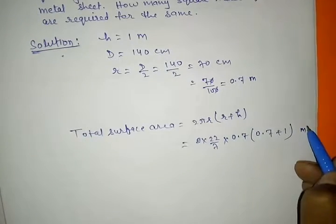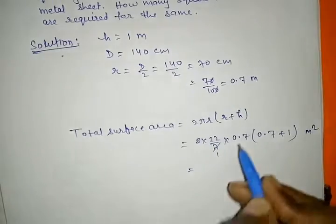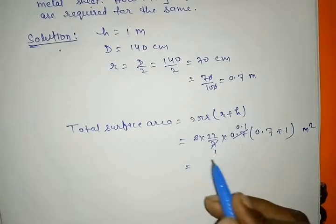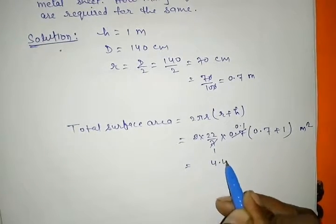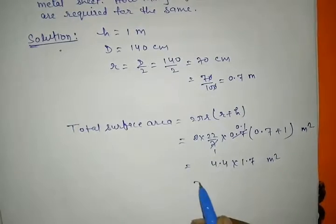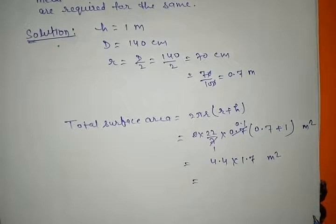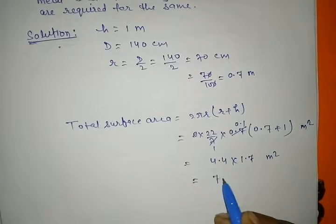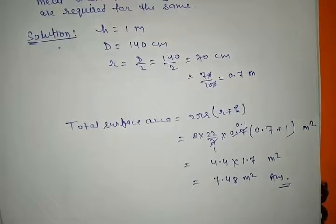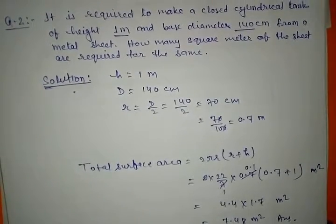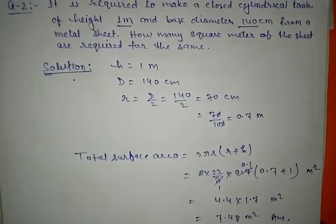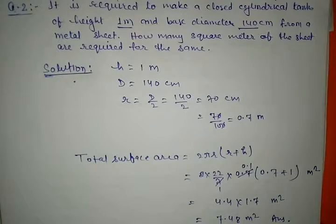यह जाएगा meter square। अब काटते हैं: 7 और 7 cancel। 22 into 2 equal to 44। 44 को 0.1 से multiply करेंगे: 4.4। और यह जब करेंगे तो यह जाएगा 1.7 meter square। अब इन दोनों को multiply करते हैं: 4.4 into 1.7 तो हमारे पास आएगा 7.48 meter square। यह हमारा answer है।